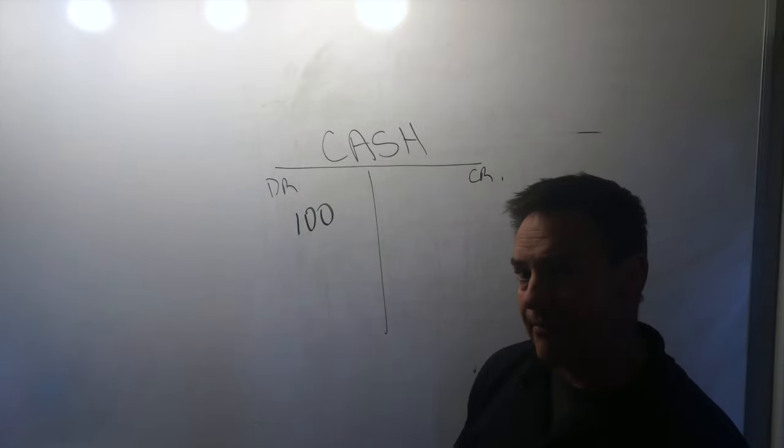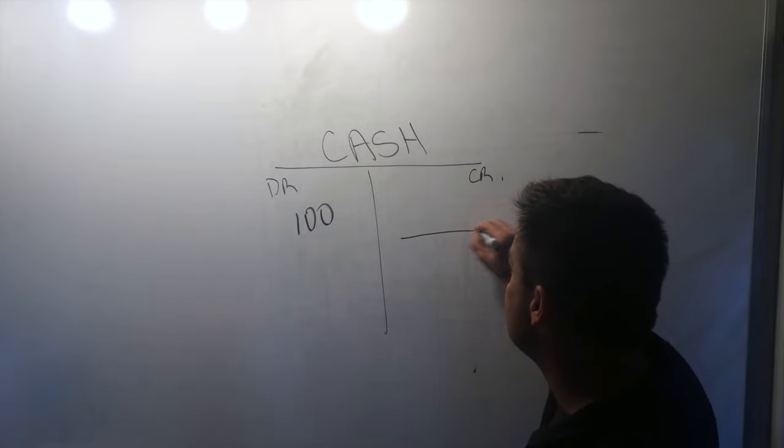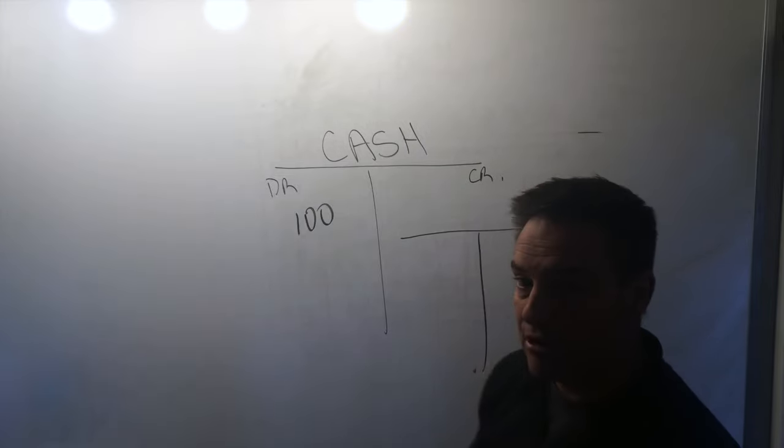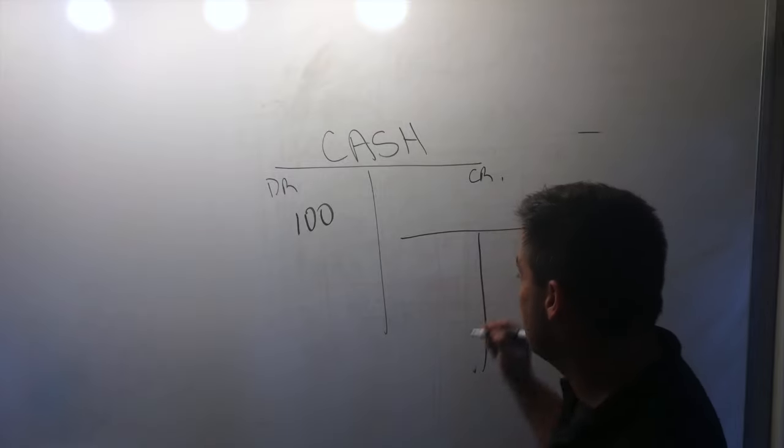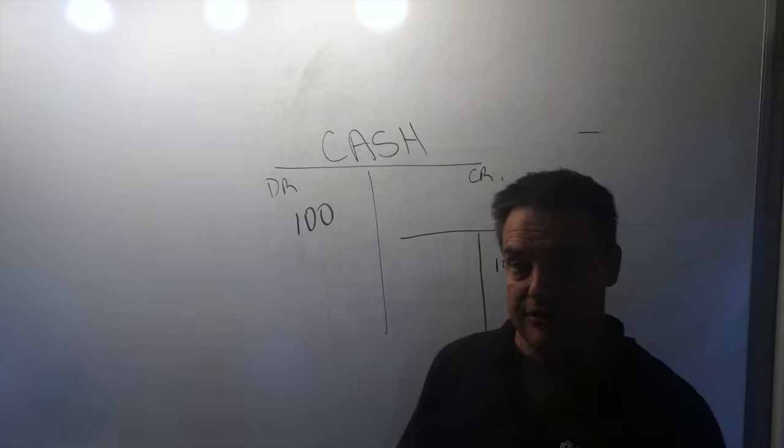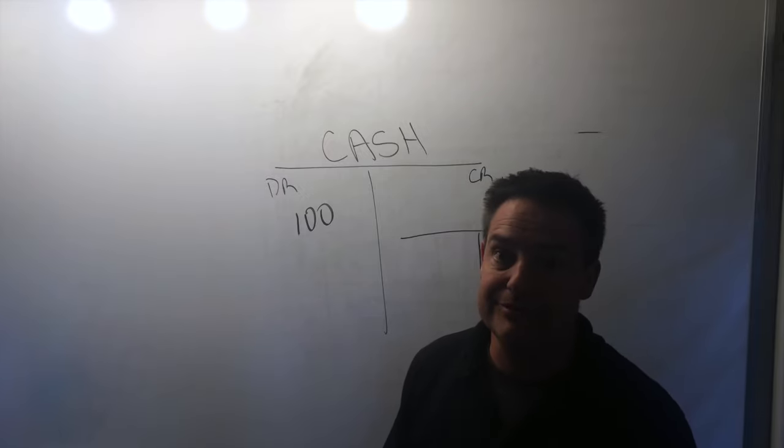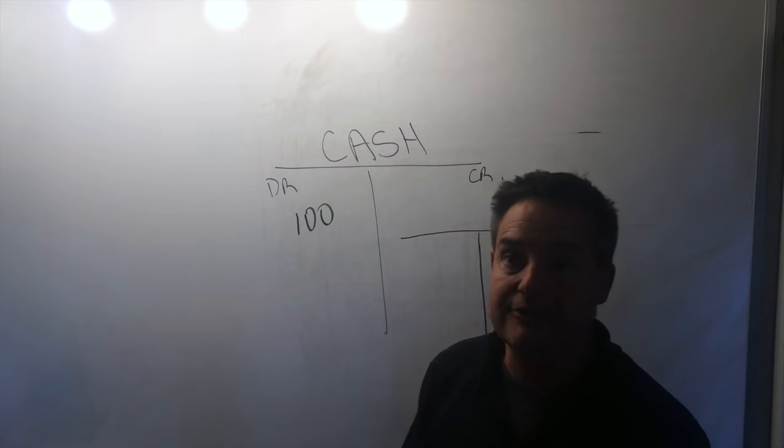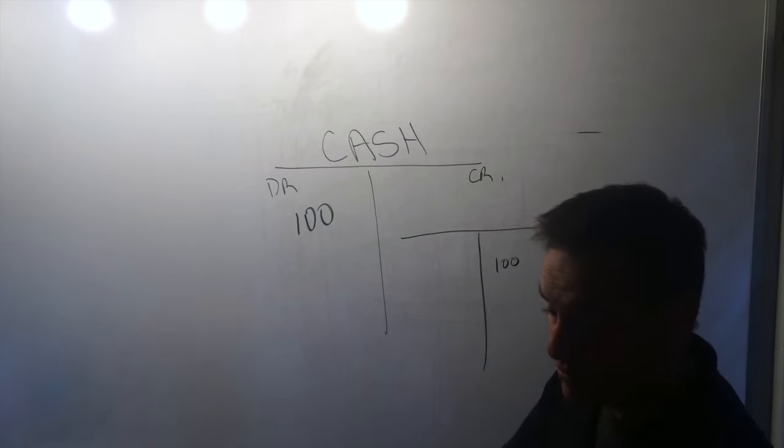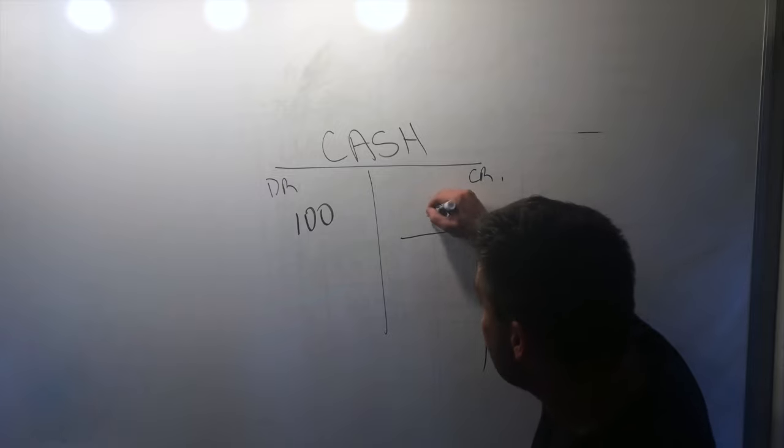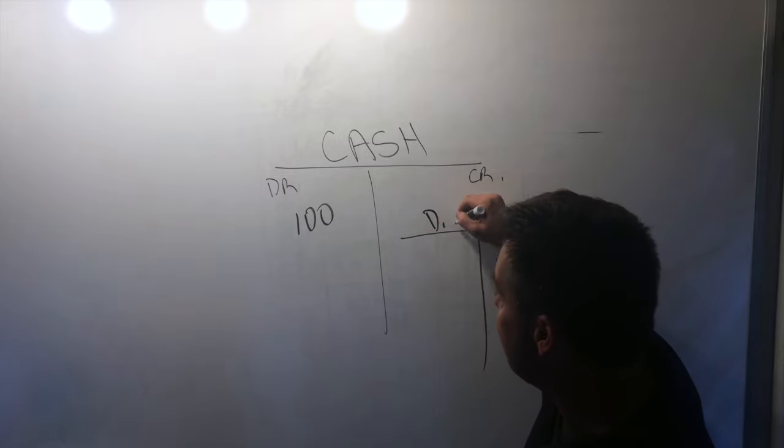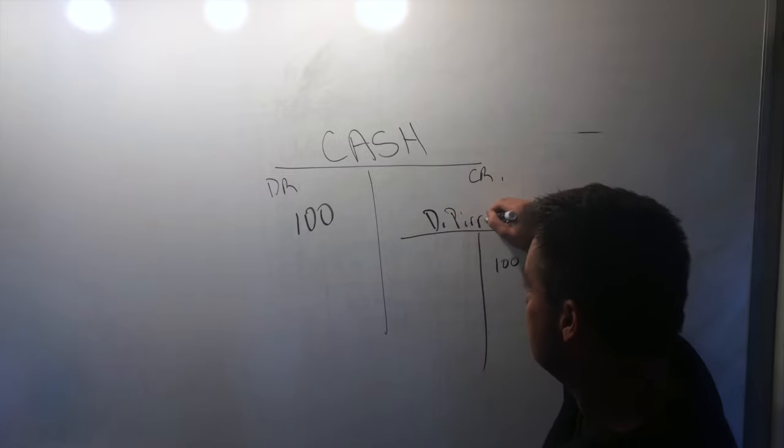Then what happens is the rules of accounting say, for every $100 worth of debits, you've got to have $100 worth of credits or entries on the right side. So the question becomes, what account or whose account should we credit? And of course, if David Perron was the person who came in and dropped off the $100, then they're going to credit David Perron's account.